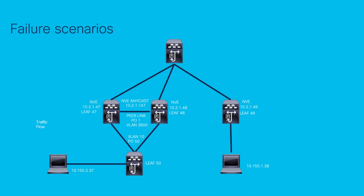For the third scenario, there is a slightly different topology. We have added a leaf 50 connected to our pair of VTEPs, leaf 47 and leaf 48, on VPC. Here, the host 10.150.2.37 can send an ICMP request to leaf 50 connected directly, which will encapsulate the traffic and send it to leaf 47 or 48 with a VXLAN header through VLAN 10. In this scenario, both VLANs 10 and 3600 need to be added as InfraVLANs.